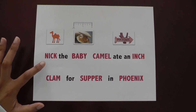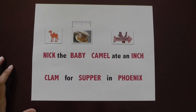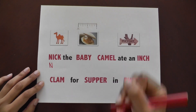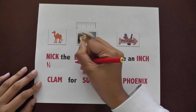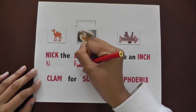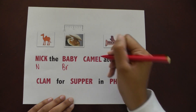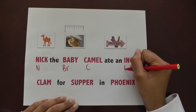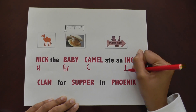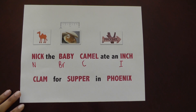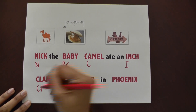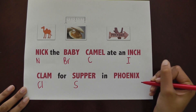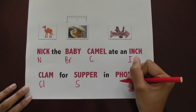Let's start with Nick. N in Nick stands for Nitrogen. B in Baby stands for Bromine. C in Camel stands for Carbon. I in Inch stands for Iodine. Cl stands for Chlorine. S stands for Sulphur. And P stands for Phosphorus.